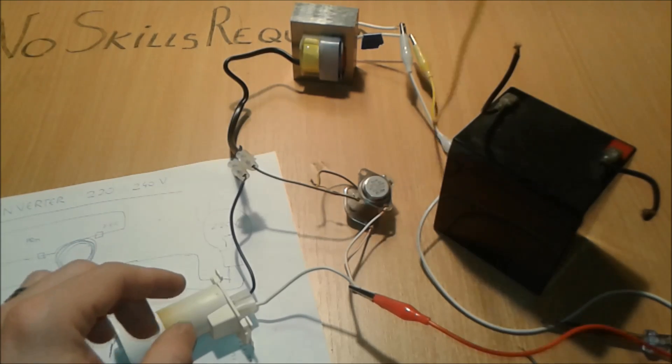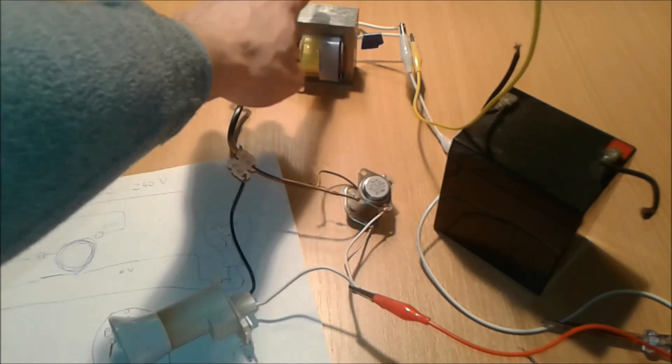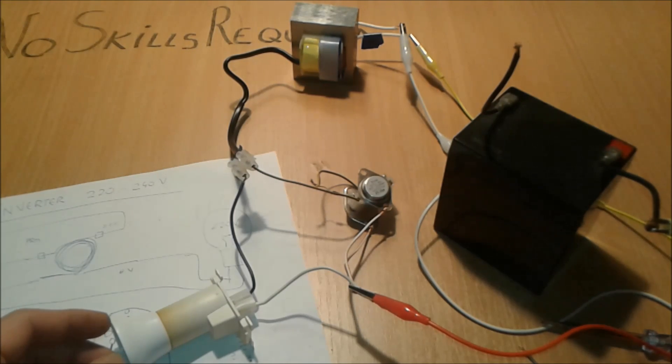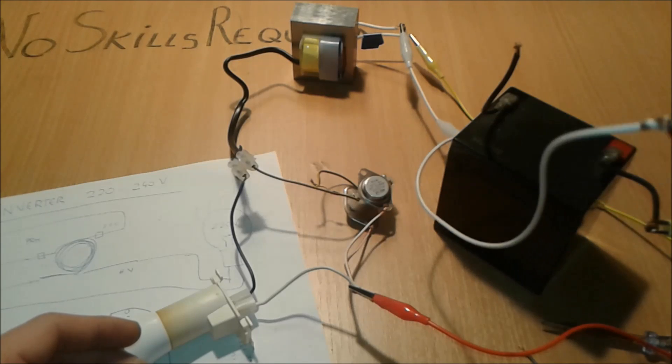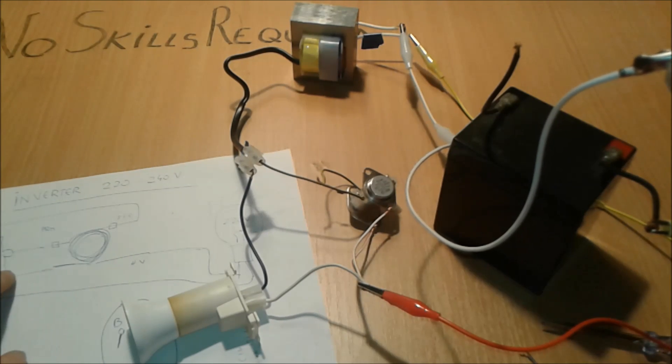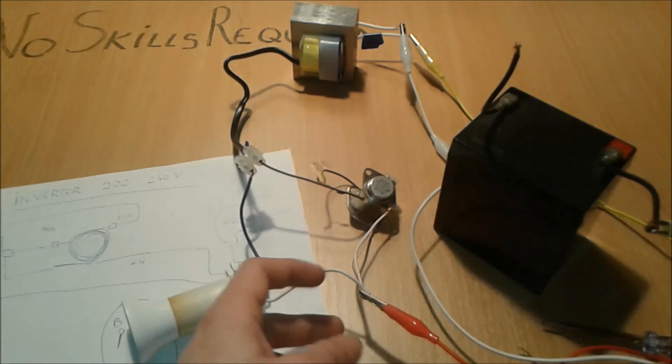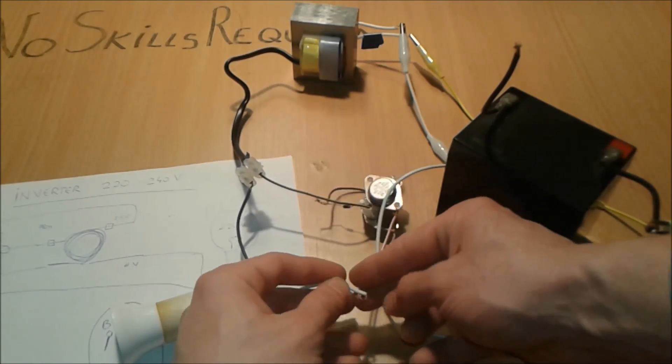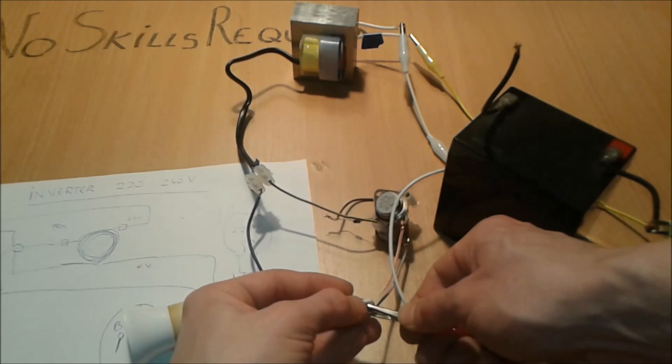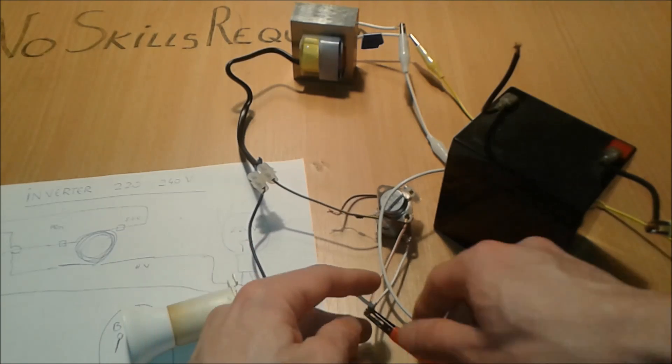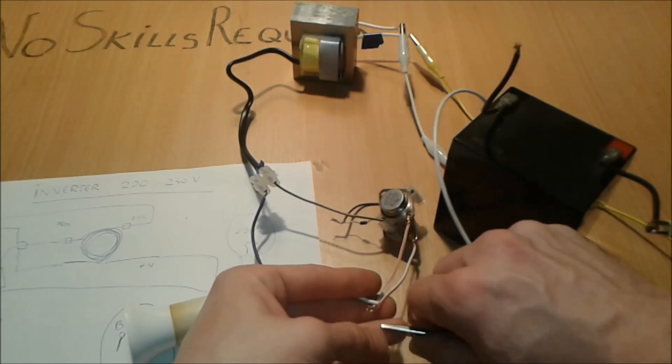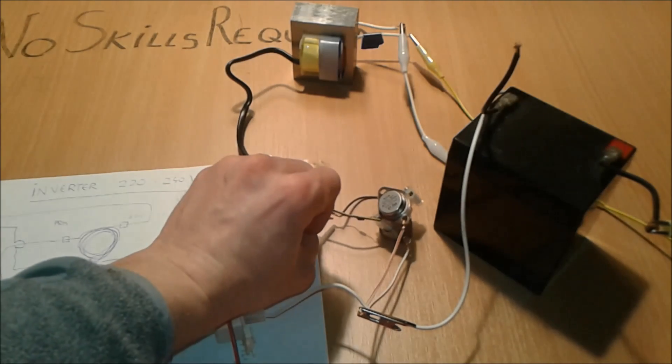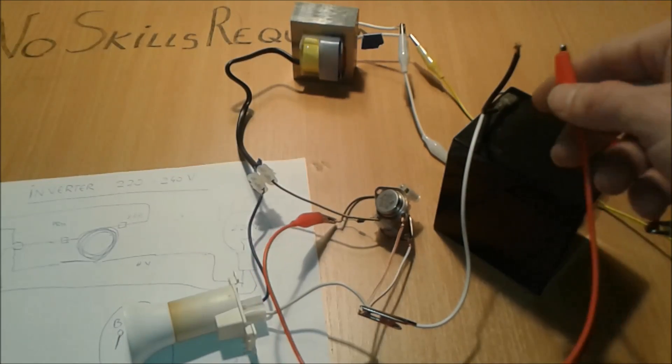And now the primary of the primary, the first one of the primary, the primary of the transformer, sorry, is going to connect to the plus of the battery, and the other one which is here, the second one. Boom. So the second connection of the primary is going to the collectors, both collectors and one side of the LED. I get confused all the time. So this white alligator clip, and the other wire is going to connect between the diode and the minus.